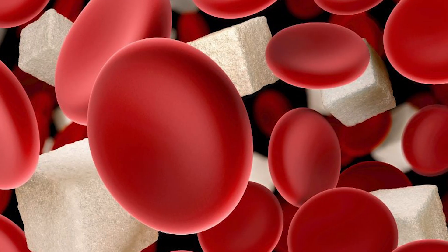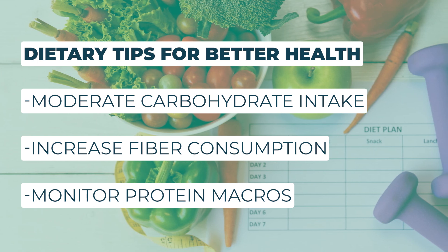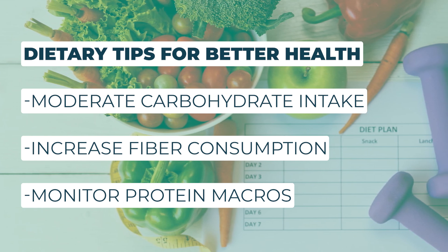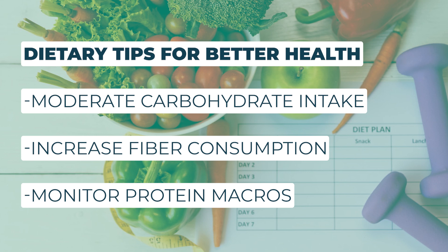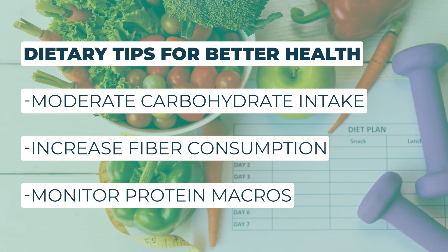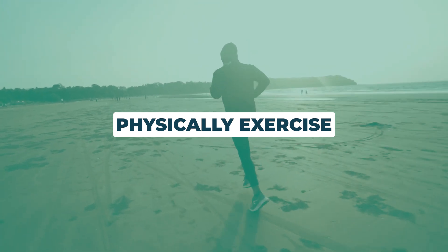Basically, you're attacking the blood sugar problem here. The first thing would be to dietarily moderate the amount of carbohydrate you're taking in, increasing the amount of fiber, watching your protein macros. So dietarily looking at that. The next thing would be to physically exercise, which can help all of the above problems because you improve insulin resistance with exercise, and of course it helps a number of other things.